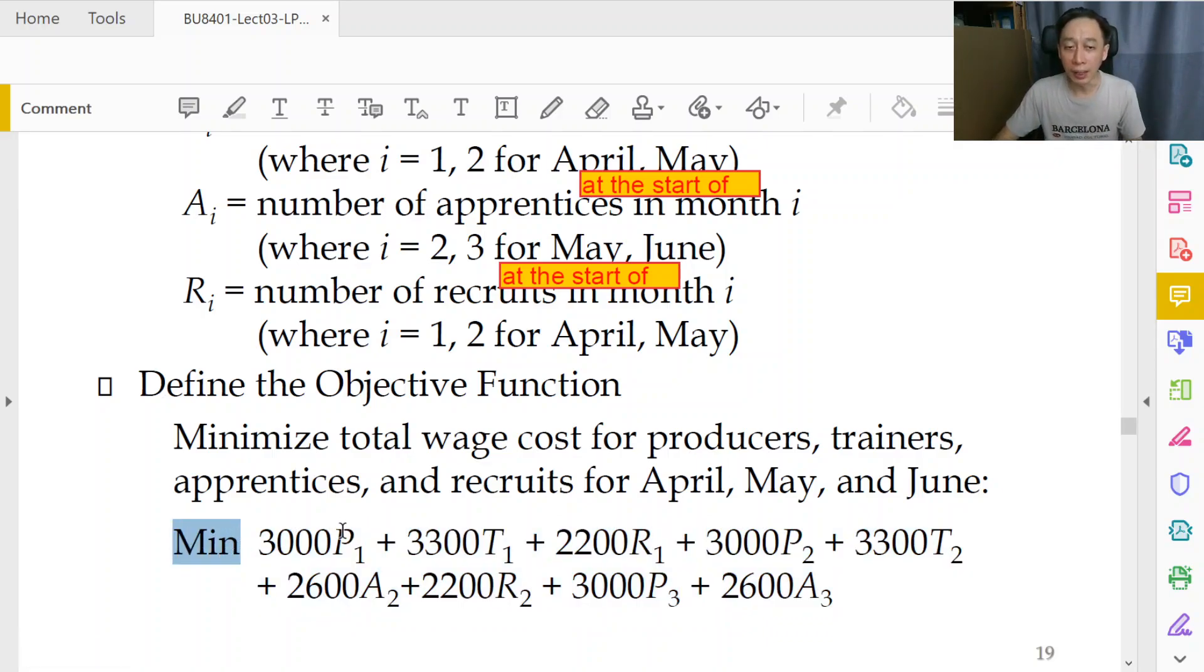Think about it again. Suppose if Solver says first month zero recruits, then we will have 2002 multiplied by zero and it's okay. Second month we have five recruits, so five recruits times 2002 will contribute to the overall cost for these three months planning.